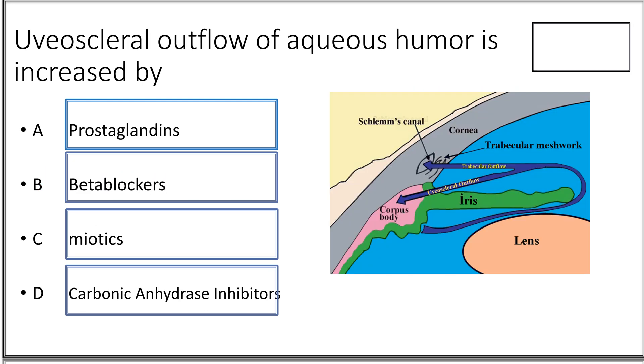Seventh question: the uveoscleral outflow of aqueous humor is increased by — prostaglandins, beta blockers, miotics, or carbonic anhydrase inhibitors? The answer is prostaglandins.